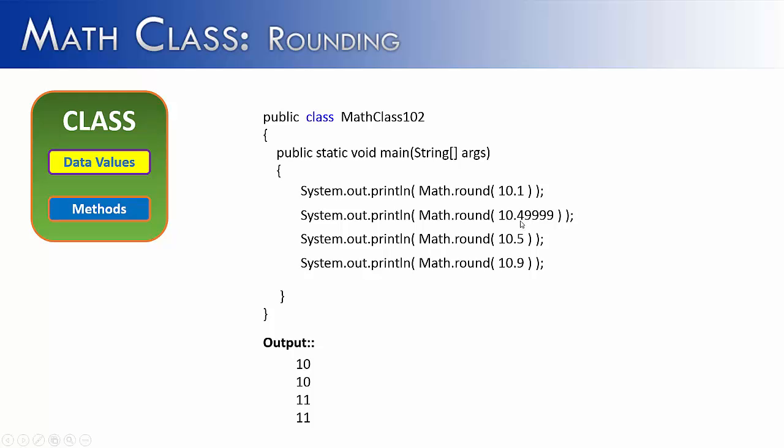And so because this is a 4 or below, it will round down. Now you might find something interesting about the results in that it does not return a double value. It returns an integer value to the program.